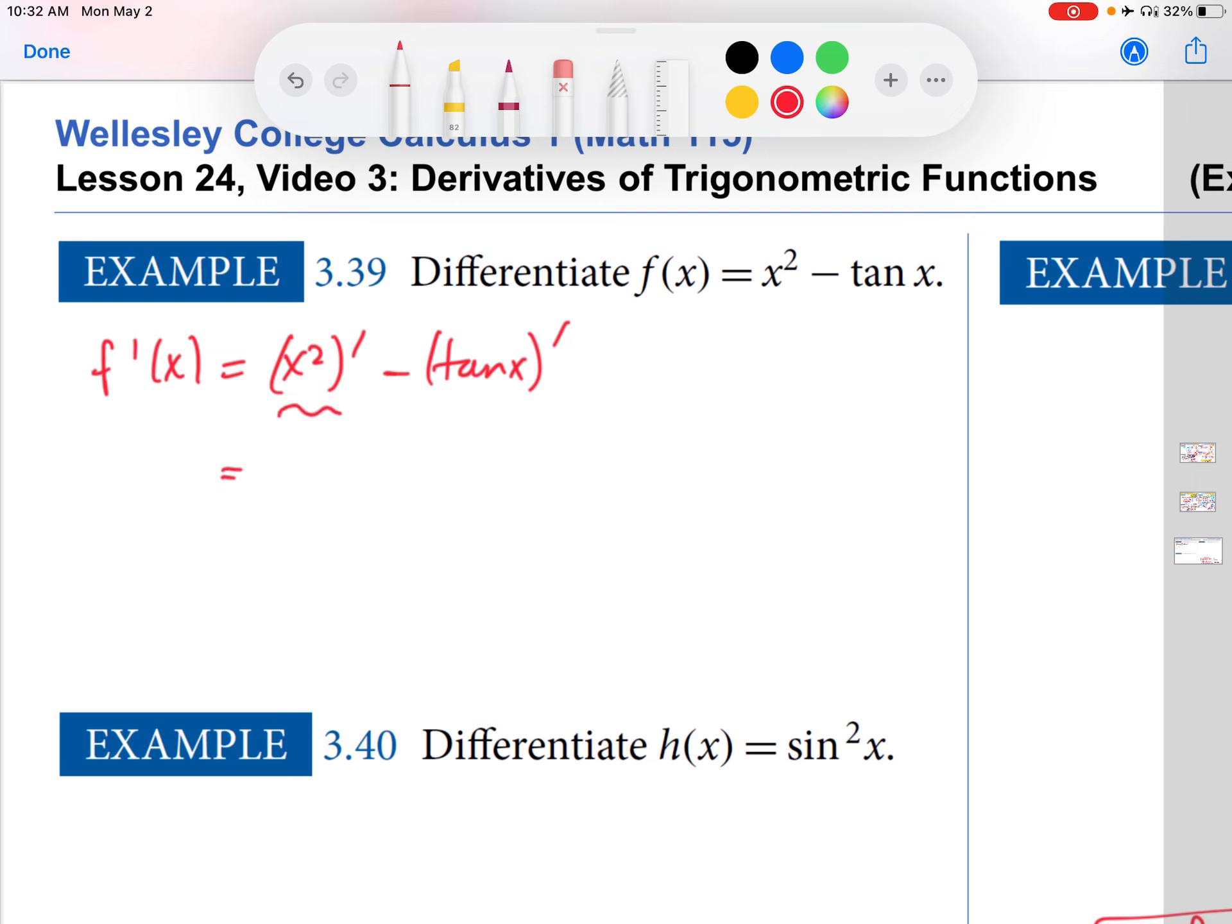So the first function is a power function. So power rule gives me 2x. The second one we just talked about, its derivative. So tangent x differentiated gives us secant squared x. Great, so that's it for that one. Nice and quick.